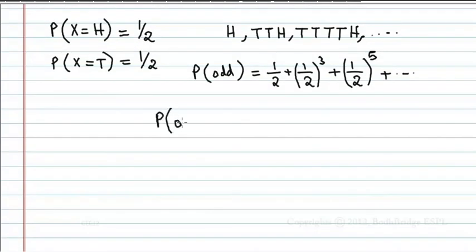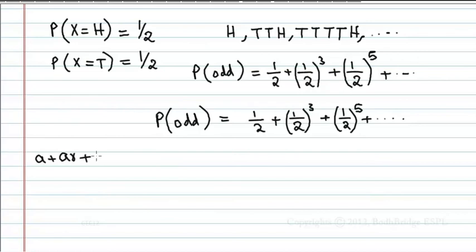Therefore, probability of odd number of tosses required for getting head is: We know that a + ar + ar² and so on is a geometric progression, which equals a/(1-r).